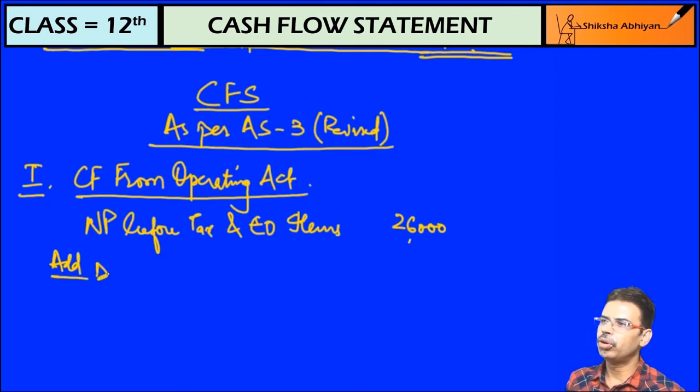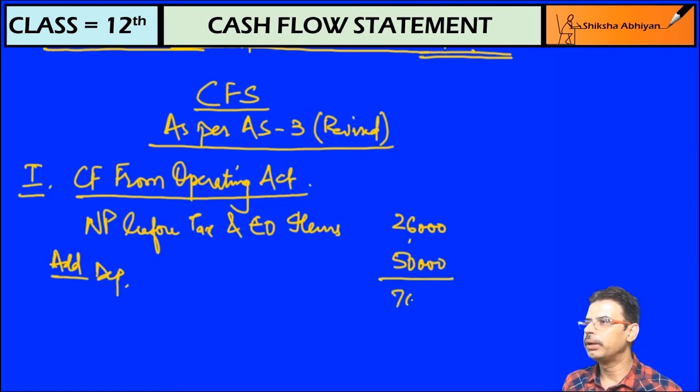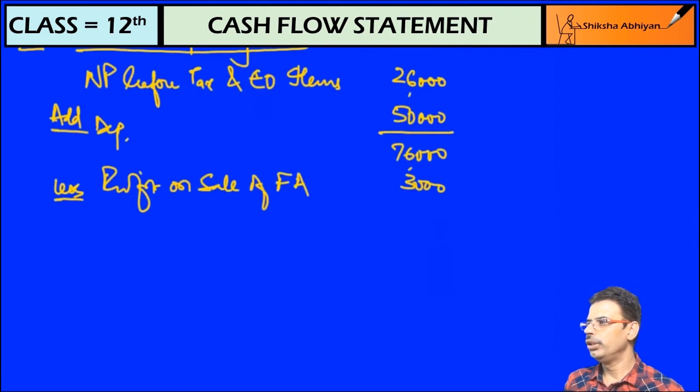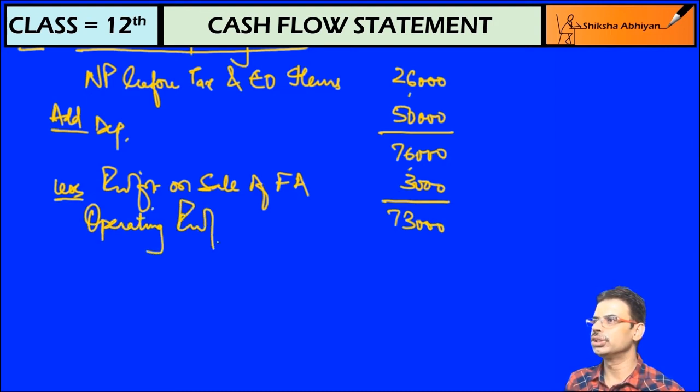Add depreciation, loss on sale, profit on sale adjusts, dividend, reserve, tax adjusts. Depreciation on fixed assets 50,000. And any loss on sale item is not there, but profit on sale is minus. Profit on sale of fixed assets 3,000. This is my operating profit before working capital changes, 73,000. Now I will adjust the current assets and current liabilities.